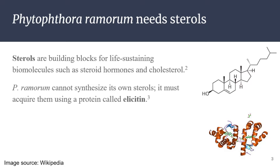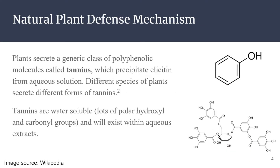The question is why, and one of the key intuitions behind this is the fact that Phytophthora remorum needs sterols. Sterols are building blocks it uses to create biomolecules such as steroid hormones, which are used for cell signaling, and cholesterol, which is used to strengthen its cell membrane. P. remorum on its own cannot synthesize sterols, so it must acquire them from external sources using a protein called elicitin.